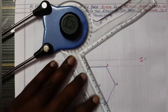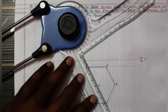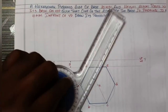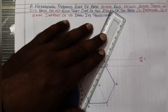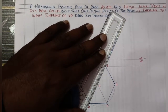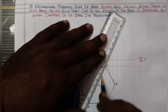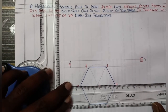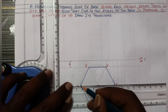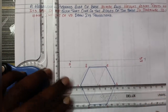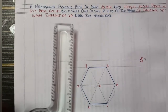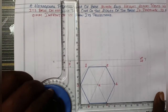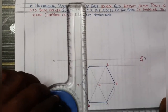If you have center axes, we will draw center axes solid. You will apply the method, draw the circle method, and you will find the center axes easily. Center axes are very important. This side of base is 30 mm.